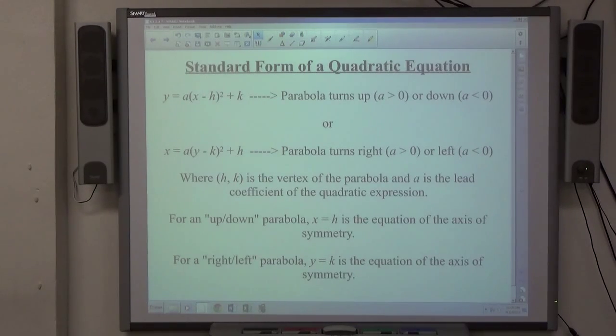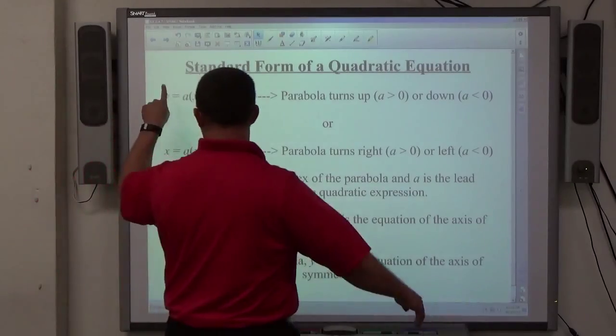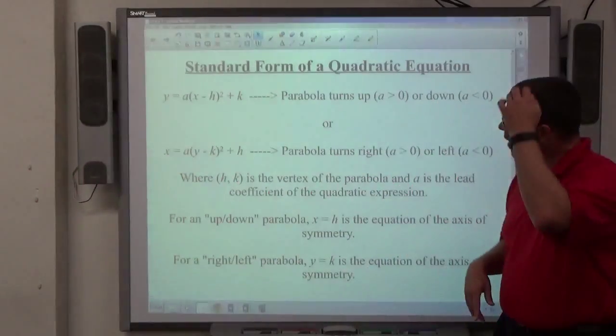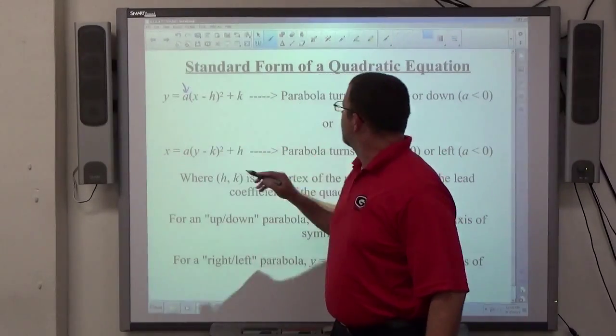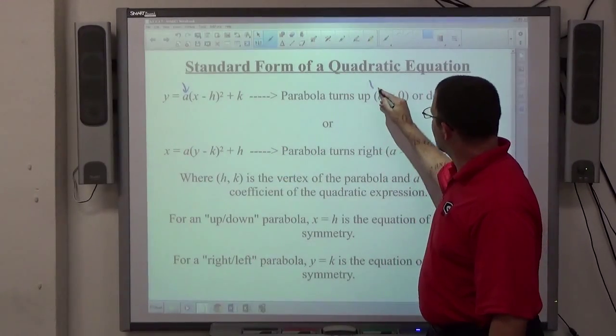If the parabola has x to the second power, y to the first power, it's going to be an up or down turning parabola. If the number in front of the parentheses here is positive, it turns upward.